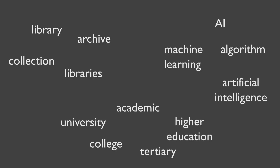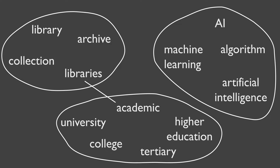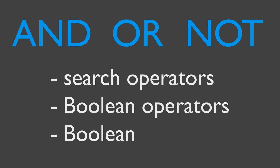Once you've come up with a list of keywords for your search concepts, you'll need to put them together in a way that your search engine will understand. There are three connecting words that search engines recognise when combining words – AND, OR, and NOT. These connecting words are known as search operators, boolean operators, or just boolean.